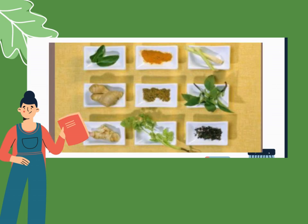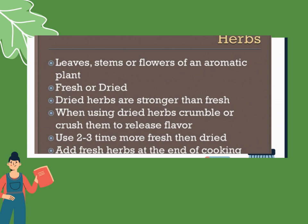These are examples of herbs and spices. What is the difference between herbs and spices? Herbs are the leaves, stems, or flowers of an aromatic plant — either fresh or dry.